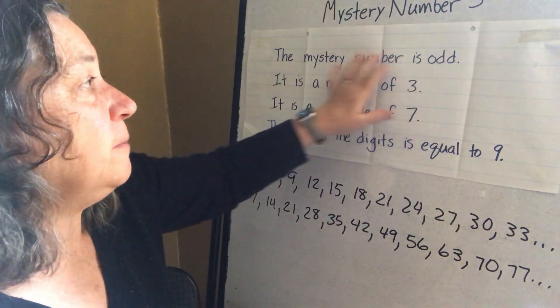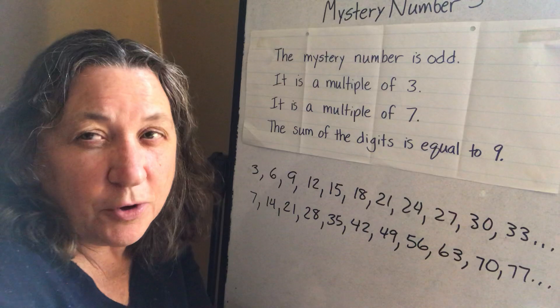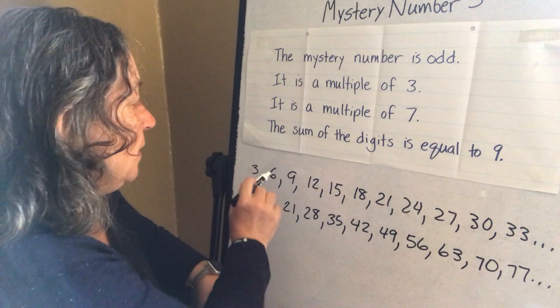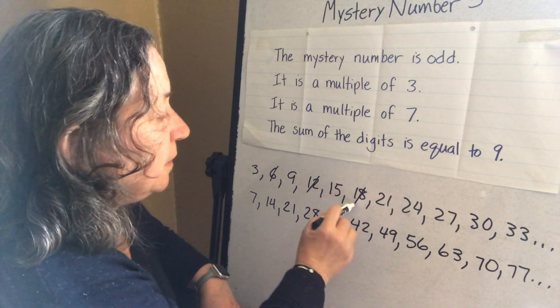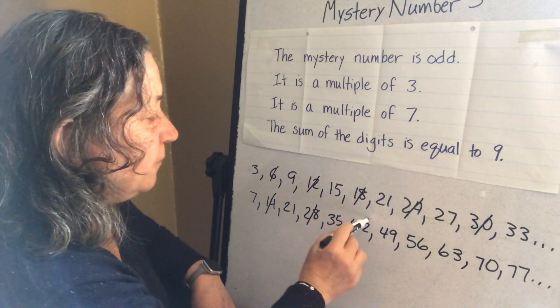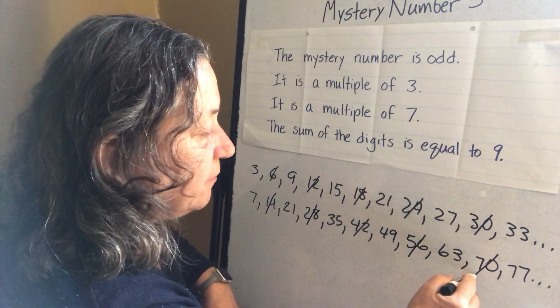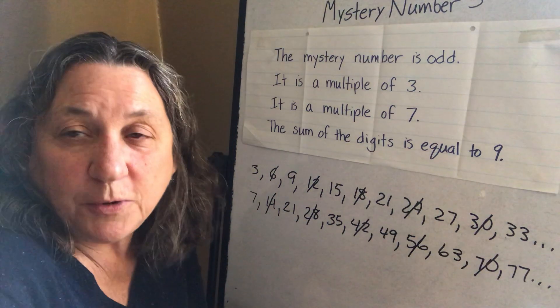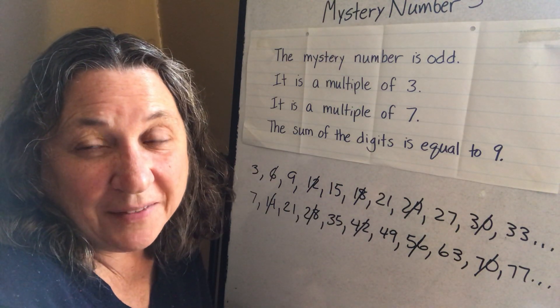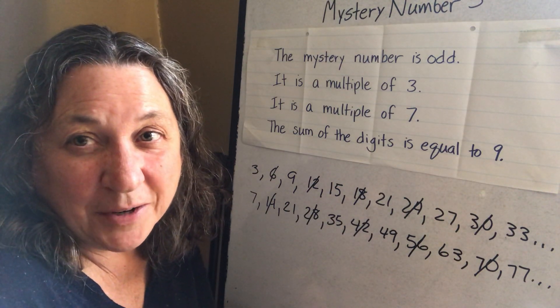Now we can go back to the mystery number is odd clue and let's cross off all the even numbers that are down here. That'll take a few minutes. 30, 15, 28, 42, 56, 70. If you're trying to do this with me and I'm going too fast at any time you can just pause the video and then you can turn it back on.